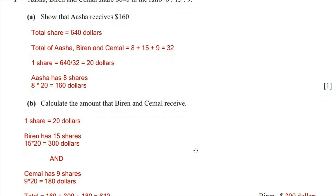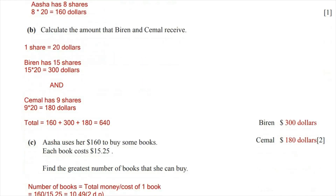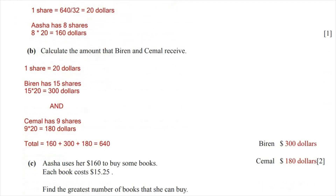The same applies for Simmel. Simmel has 9 shares, so 9 multiplied by 20 equals $180. To cross-check, we can add the values of Asha, Belen and Simmel, which equals $640. So the final answer is Belen receives $300 and Simmel receives $180.